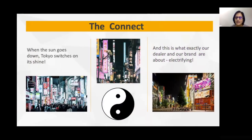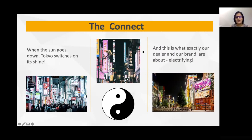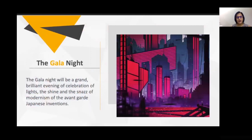When the sun goes down at night, Tokyo switches on its shine and becomes bright and beautiful. This is exactly what dealers and brands are about — they are electrifying, vivacious, energetic, colorful. We were drawing parallels between our dealers and Tokyo, with the common connect being shine, lights, and brightness. This is the space connected to the central theme, yet different from the traditional overall theme — a subset of the main theme. Once you crack it, it's a lot of fun.